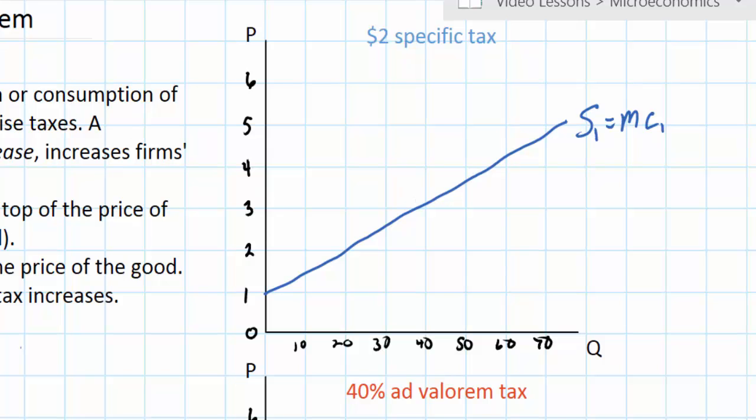A $2 specific tax would shift this supply curve vertically by $2, since it increases the marginal cost at every level of output in the industry by the amount of the tax. So I can show the impact of the specific tax as a vertical shift upwards by $2. The new supply curve would have the same slope as the original supply curve, but would lie exactly $2 above the original supply curve. I'll call the new one S2 equals MC2. And this is the supply curve with the tax.